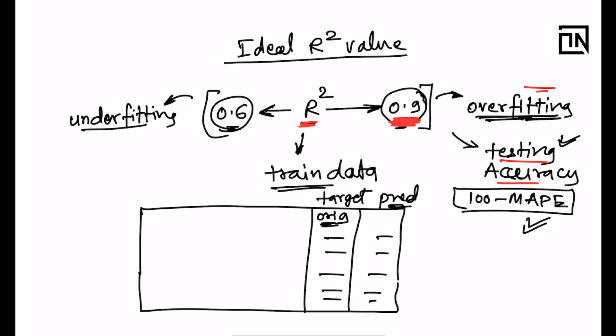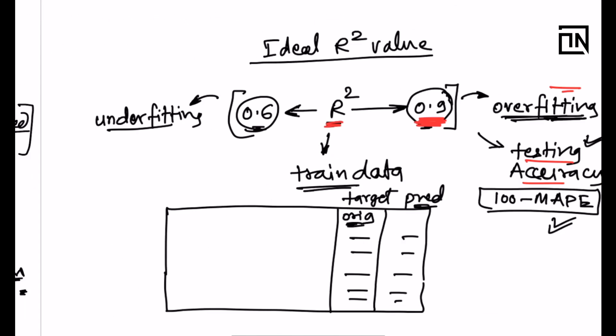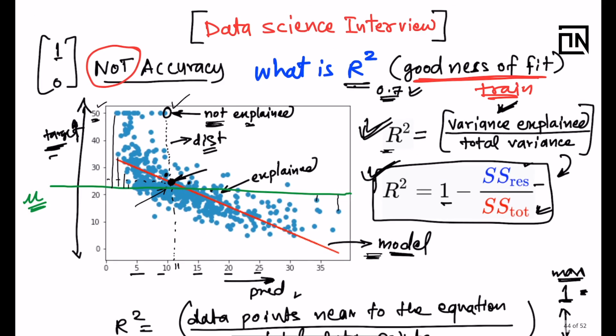To summarize: R squared is a goodness of fit measure on training data. In layman's terms, it is the variance explained by the model divided by total variance in the data. R squared is NOT accuracy — it varies between 0 and 1, but a good range is 0.6 to 0.9. Values in that range indicate the model is explaining a good amount of variance in the training data.